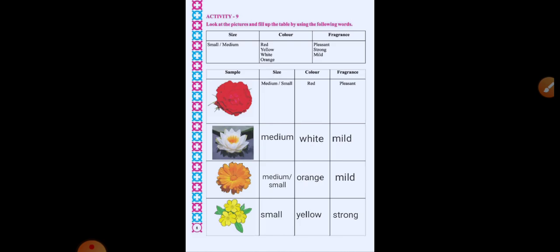First, we have table of size, color and fragrance. Size here means the flower's size. It is small, medium, right? Color. Color of the flowers. Ki flowers ki color kaise hote hai? Right? And fragrance means khusbu. Jo flowers hai, us bhi khusbu. Kaisi hoti hai? Us ki smell kaisi hoti hai?